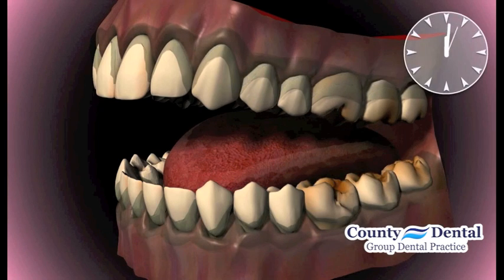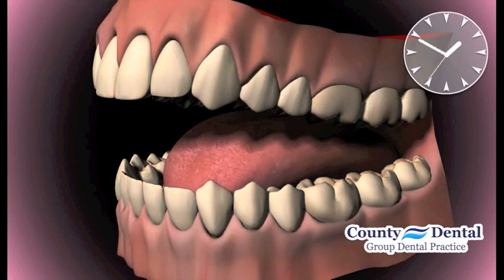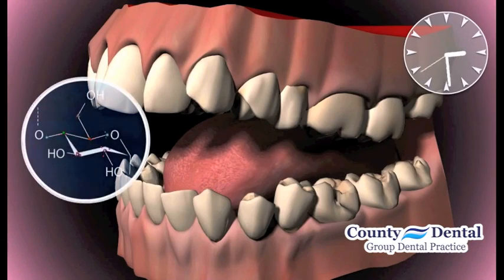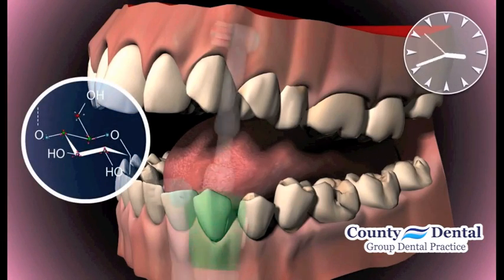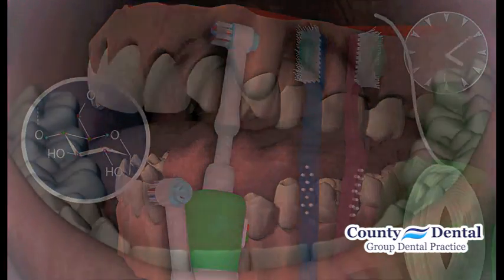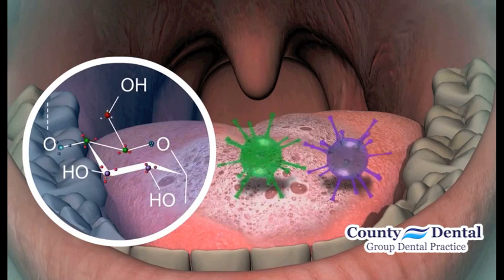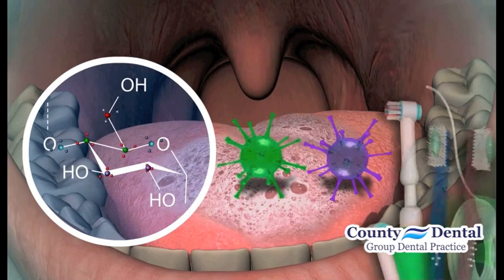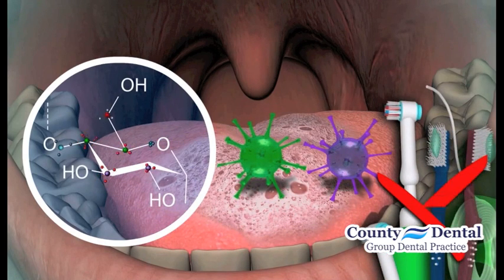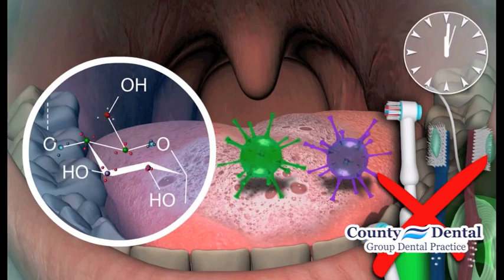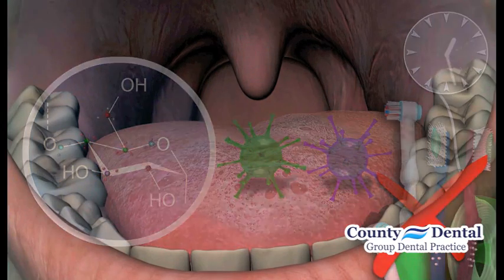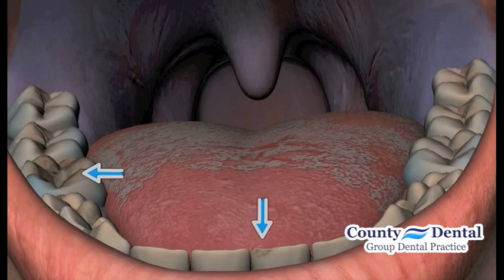Host factors encompass all the factors relating to the host, such as tooth anatomy, saliva composition, and cleaning habits. Plaque is a layer on the teeth consisting of saliva parts, bacteria, and carbohydrates, and forms when the teeth are not cleaned properly. When all these factors come together — bad cleaning habits, plaque, and time — they lead to the formation of caries.